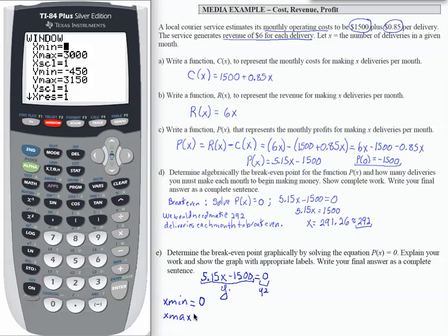There was nothing that indicated a maximum number of deliveries. I know from Part D that my breakeven should be 292, so I'm going to go ahead and just let x max be 500. That's just a reasonable guess for a reasonable window. So I have x min is 0, and I want x max to be 500.